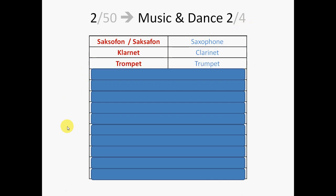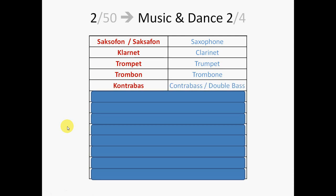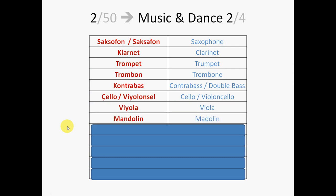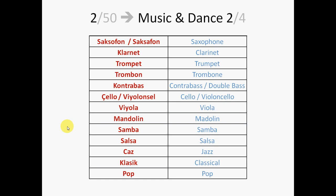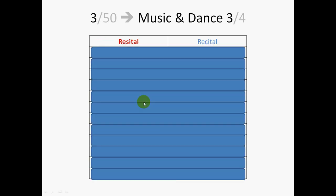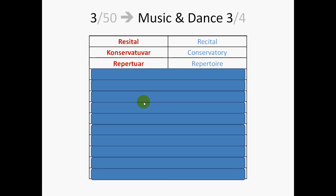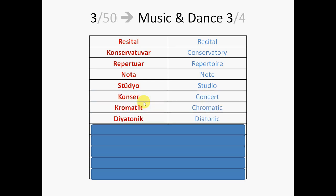And one more information before I continue with the next page. I put these numbers here so that if you are tired or bored at some point and give a break, you will know where to resume later. This number shows that there are total 50 pages. And this is the first page of it. This is the category. And in this category, I have 4 pages. And this is the first page of it. So, now I continue with the second page. Saxophone. Clarnet. Trompet. Trombon. Contrabass. Cello or violoncel. Viola. Mandolin. Samba. Salsa. Jazz. Class. Classic. Pop. Recital. Conservatoire. Repertoire. Nota. Studio. Concert. Chromatic. Diatonic. These are technical terms in music. So, if you are not a musician, probably you might not know their meanings. If it is so, I think you may just skip the Turkish translation without any problems. Well, up to you.